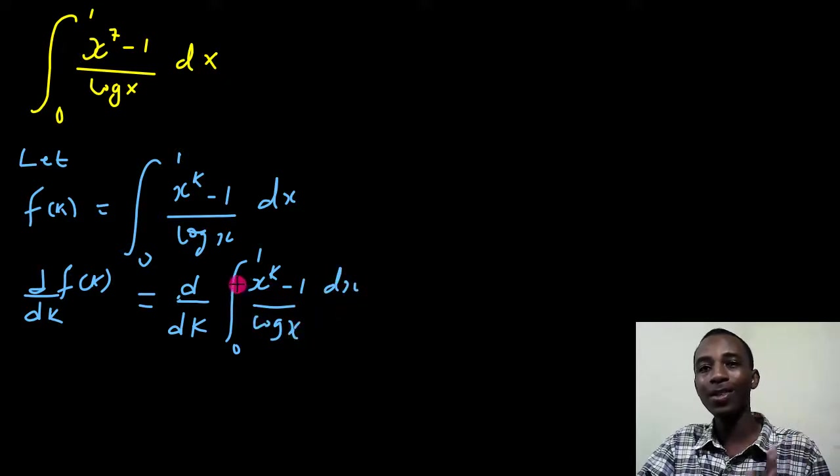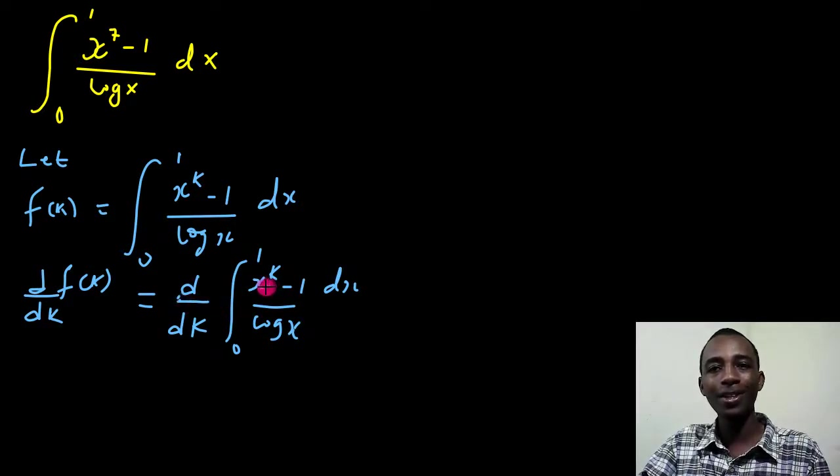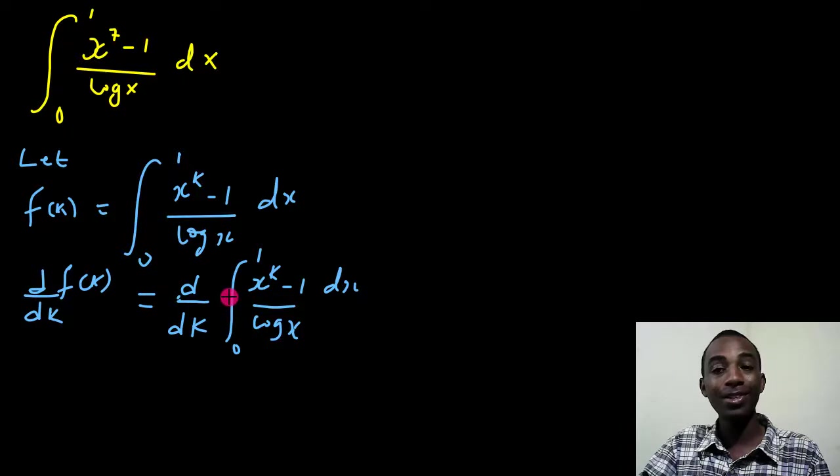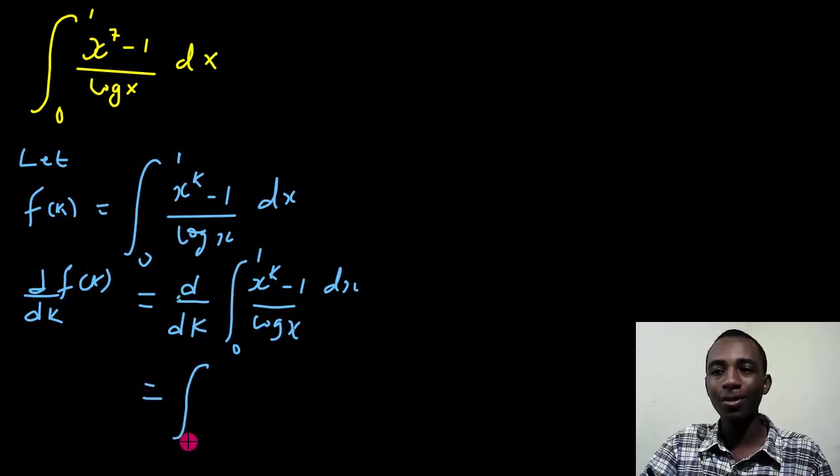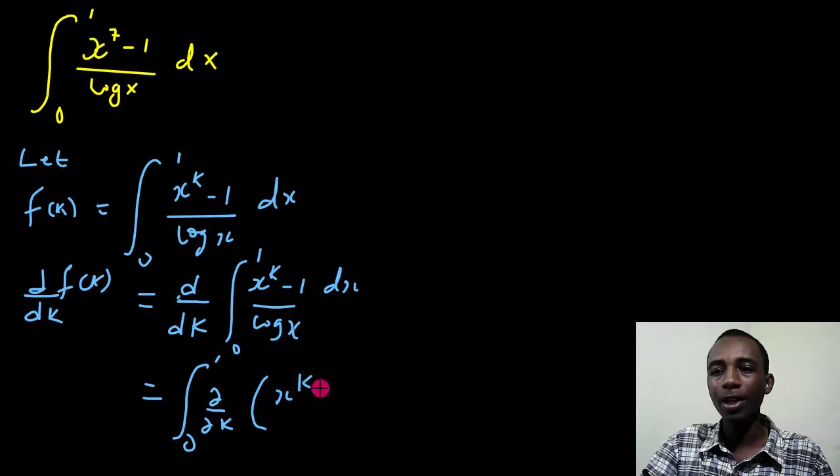But of course, according to the Leibniz integration rule, I can put this derivative inside here. And then that's going to now become a partial derivative according to the rule. So that's 0 to 1, the partial derivative with respect to k of x to power k minus 1 divided by log x dx,